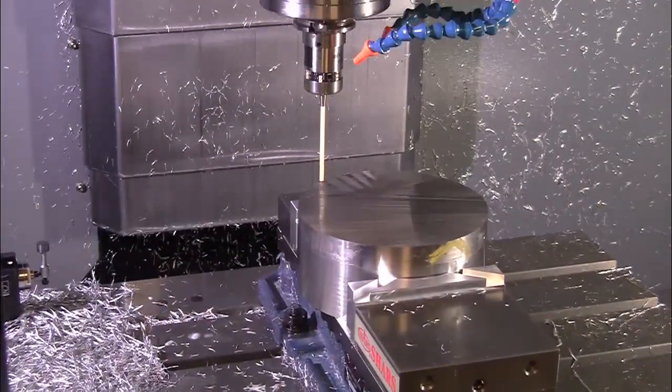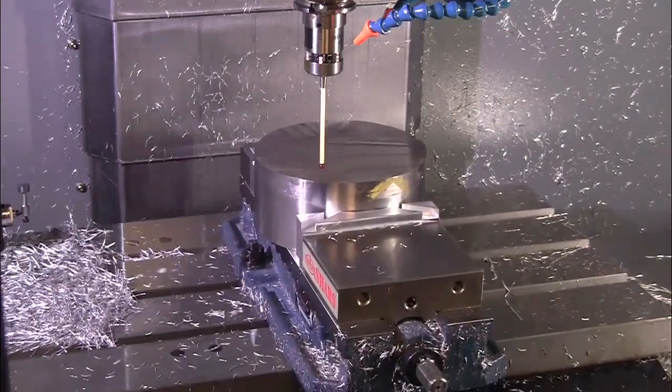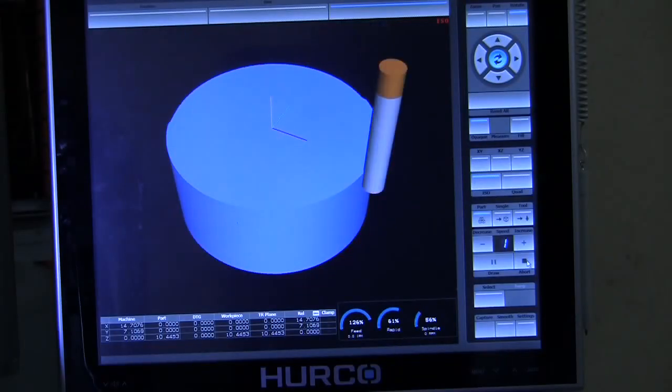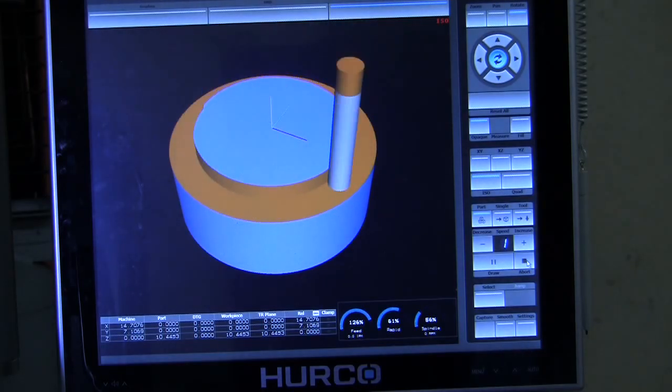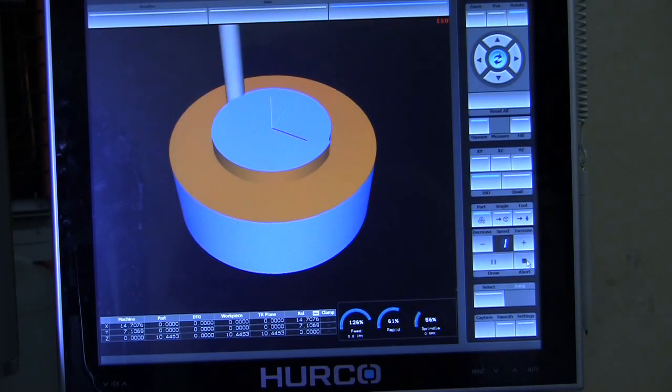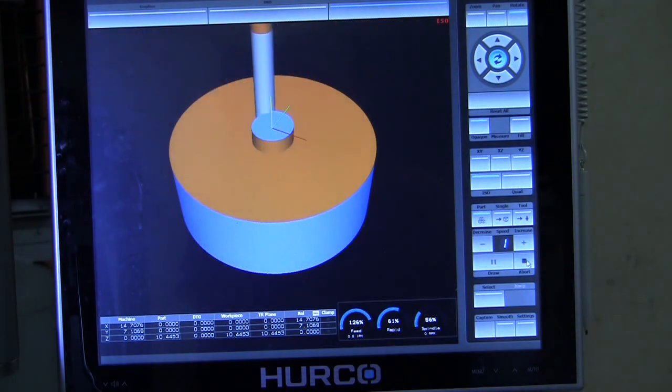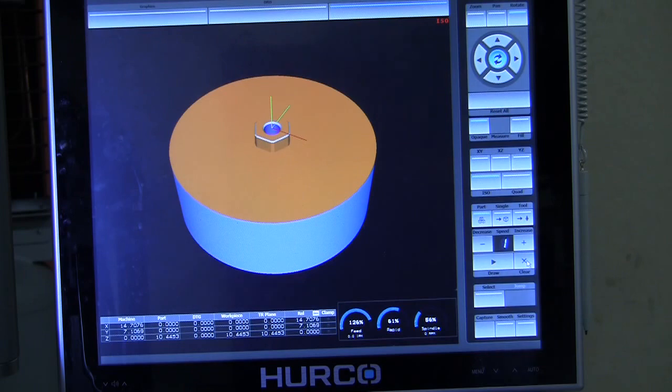I then programmed the backside—I'm going to machine the backside off, machine the hex, and drill and tap the 5/8. I programmed that all in Fusion 360, sent it over to the Herco, and was able to simulate it right on the machine, which is a really great feature—being able to simulate your G-code as G-code versus simulating it in the CAM program, which is not the same thing.